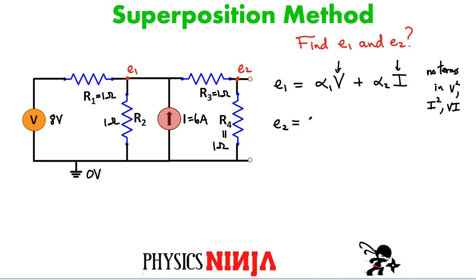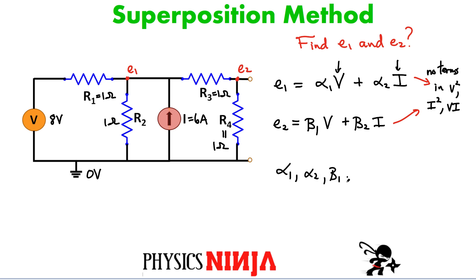If I did a little bit of algebra, what I would find at the end are different coefficients for the voltage at E2. However, it would still look linear in the source terms — no terms with V squared, no terms in I squared, and no terms that multiply V times I. Those nonlinear terms would break superposition. So the key to all of this is that alpha 1, alpha 2, beta 1, and beta 2 basically only depend on values of resistors. With all that being said, let's now show you how you apply that method in order to solve it.